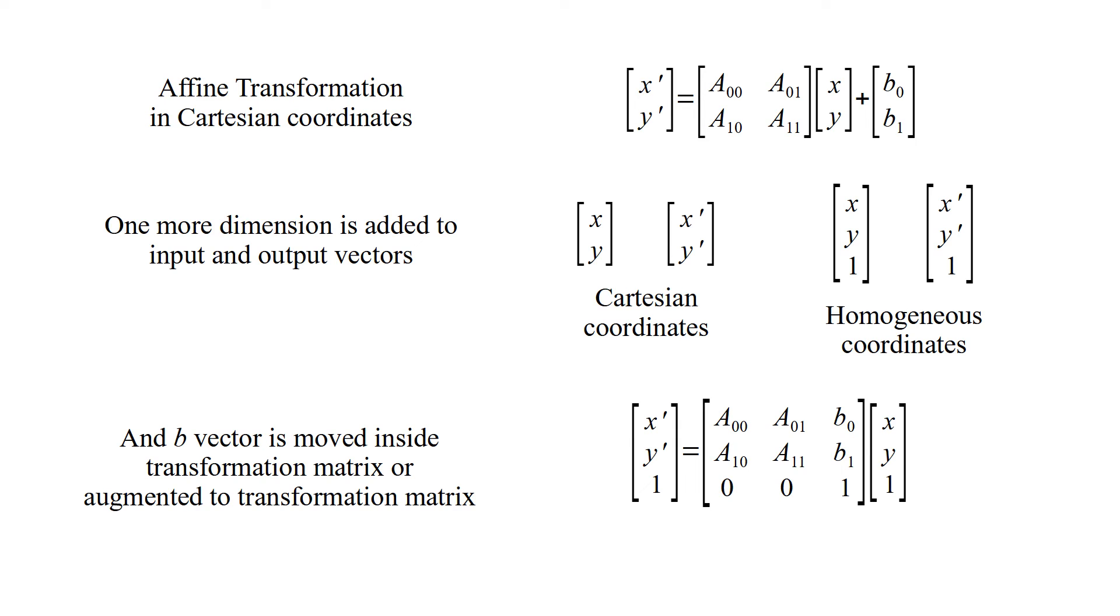And b-vector is moved inside transformation matrix, or augmented to transformation matrix. And this is affine transformation equation in homogeneous coordinates.